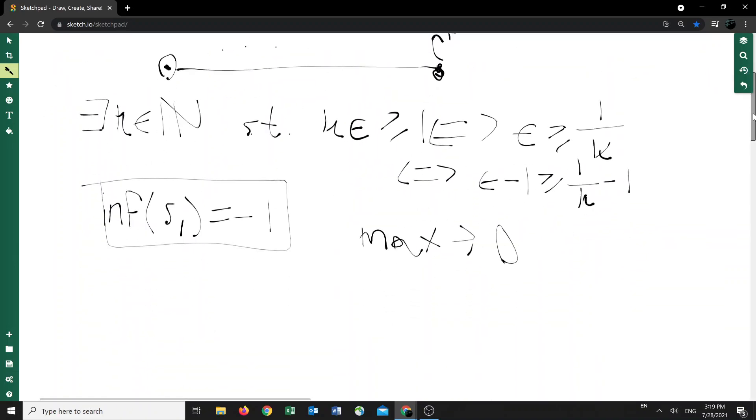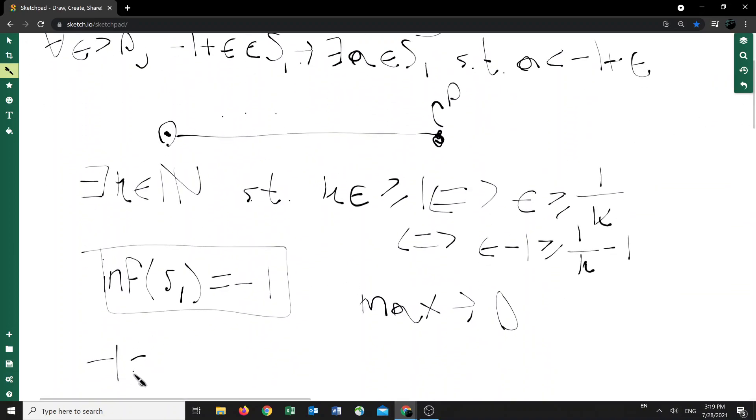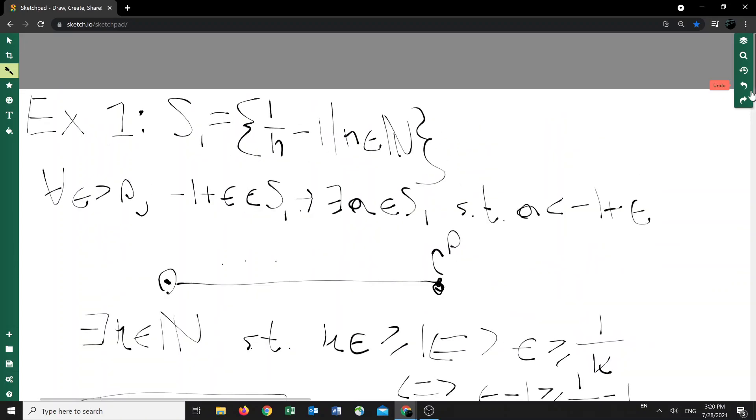But notice that the infimum is not in S1. And I mentioned this earlier too, but I guess to be more rigorous, we have that, by way of contradiction, let's suppose this can be the case. But that implies that zero equals one over N. But this is not possible, right? Clearly, this is not true for any N. And in other words, if you were to reciprocate both sides, you would get one over zero equals N. Well, that's just not valid. And so, therefore, the minimum does not exist.